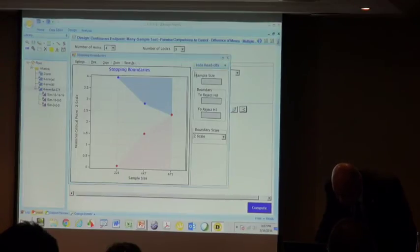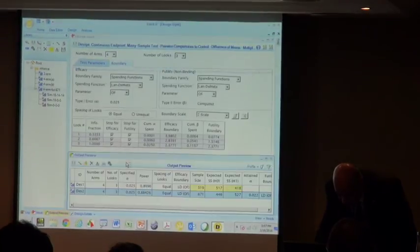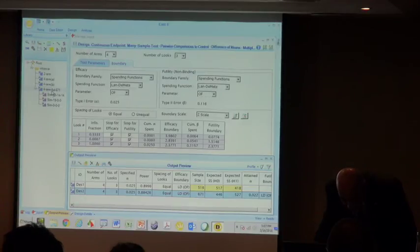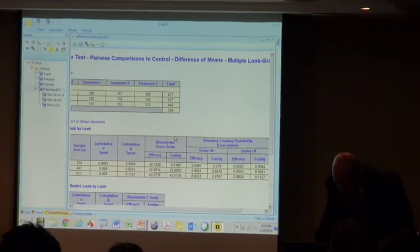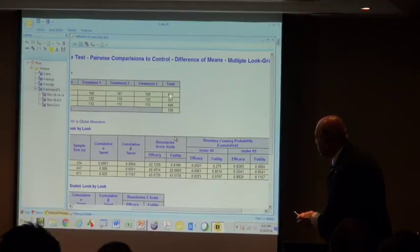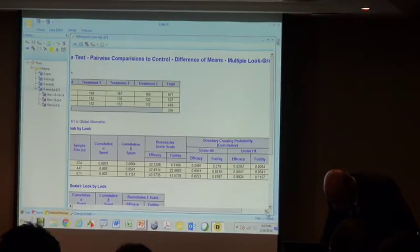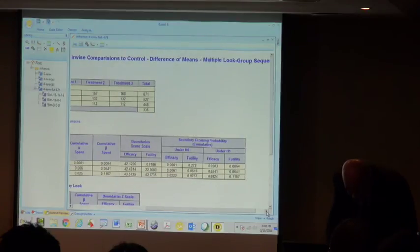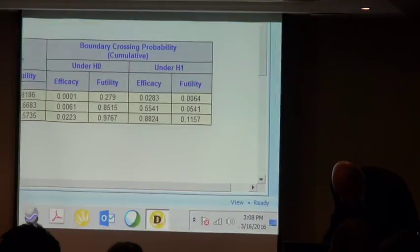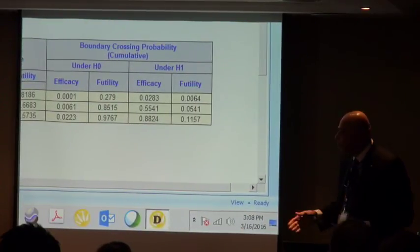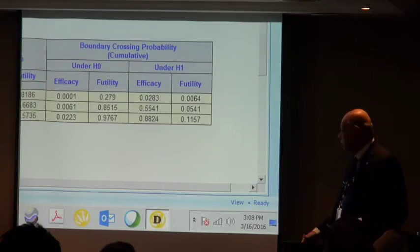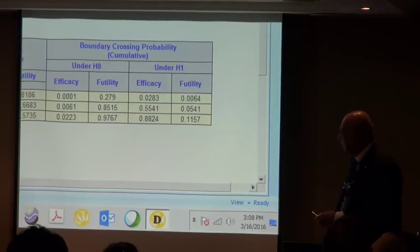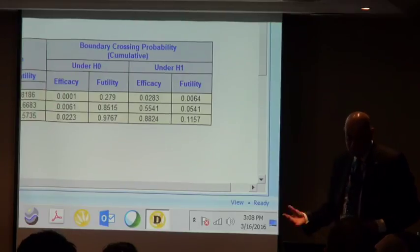We've still got the same sample size, 671 patients, but the power is displayed over here. It's slightly less. You lost about 1% in power by introducing that futility boundary, but you have certain advantages. Now you can stop early under the null hypothesis and you can also drop losers along the way.